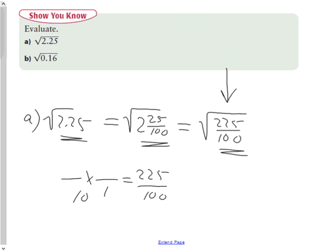Most of you probably know the denominator is going to be 10, but 225 is one of those perfect squares that some of you haven't really mastered yet, but it is 15. 15 times 15 is 225.